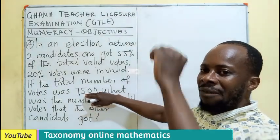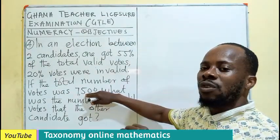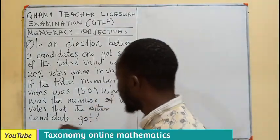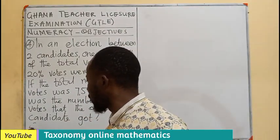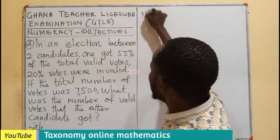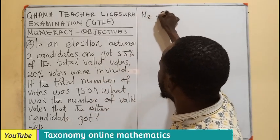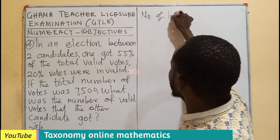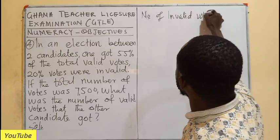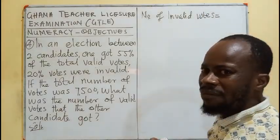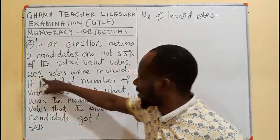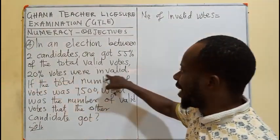This is the total number of votes cast, meaning there are valid votes and there are also invalid votes. First thing first — I'm going to find the number of invalid votes. 20% were invalid.